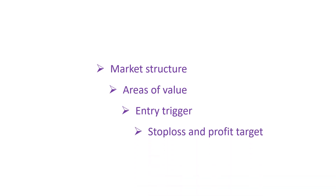Finally, stop loss and profit target. ChatGPT can assist in incorporating the ATR indicator into your trading strategy by providing information on how to calculate and interpret the ATR value. Additionally, ChatGPT can help you identify key levels of support and resistance based on historical price data and interpret them in relation to the ATR value to set appropriate stop loss and profit target levels. This can help you manage risk and maximize potential returns in your trades.